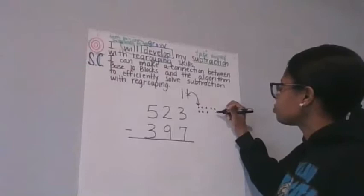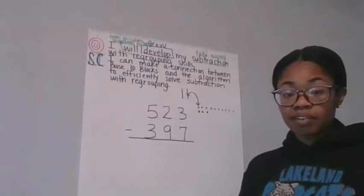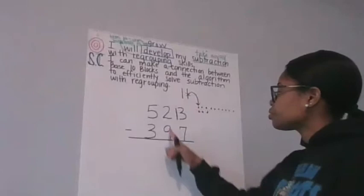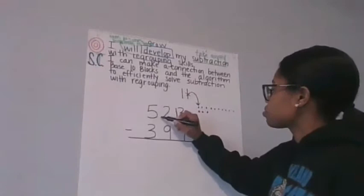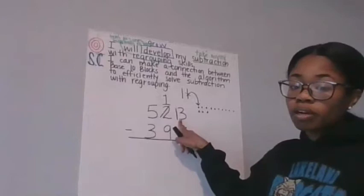One, two, three, four, five, six, seven, eight, nine, ten. Oh, now I have enough ones to take away seven. Oh, this is going to become 13. But I have to remember, I took away one of those tens. So this two now becomes a one.